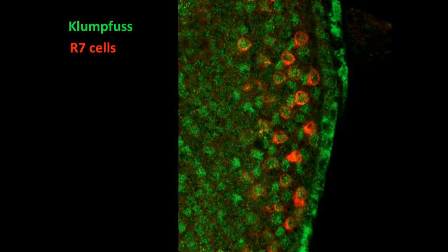If we look closer, we see that clue is in fact expressed in every R7 cell, which are outlined in red, making it a good candidate regulator of spineless.